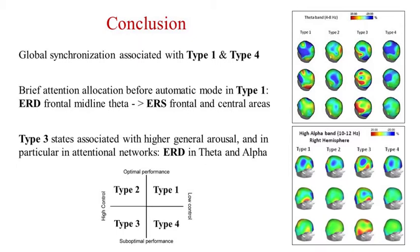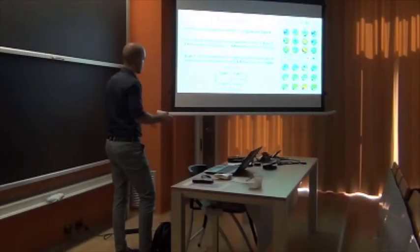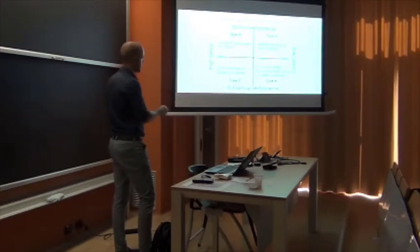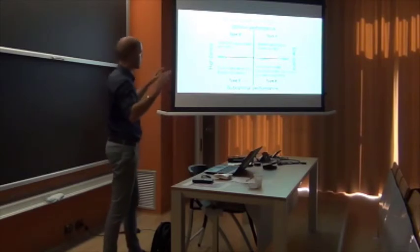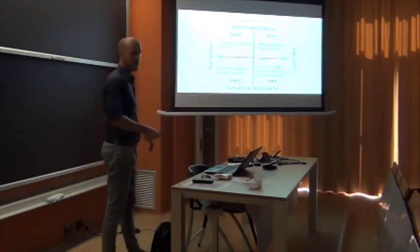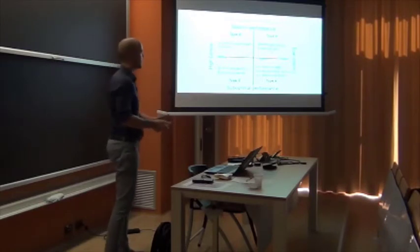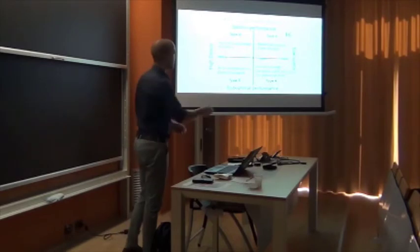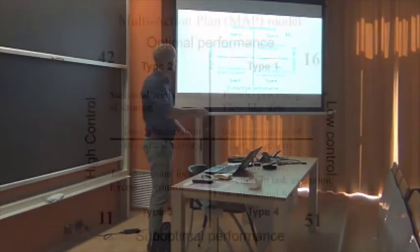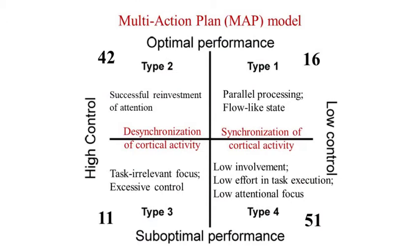So coming to the conclusion, it's a repetition of what I just said. So there is a confirmation of global synchronization associated with type 1 and type 4, as you can see in the theta bands, a lot of blue here, and less blue and more red in the middle, type 2 and type 3. They say as I said there's a brief attention of automatic mode in type 1, so this in here in frontal midline theta that you find here, followed by the ERS immediately after. So it could be, as I said, they focus briefly, then they disengage, let's go automatic mode and let's do it as we should. And last, type 2 and type 3 states are associated with higher general arousal, as you can see here from the high alpha, relatively more red than in the other cases. And in particular, what they claim to be more like attentional networks, like the left part of the brain, which should happen both in the theta band and also in the alpha band. They say we have a sort of confirmation of our multi-action plan model, so more synchronization here, more synchronization there.